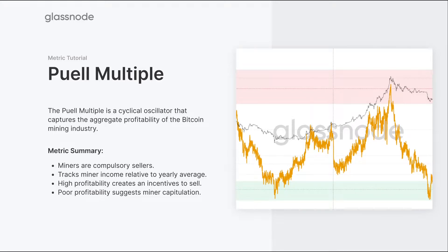The Pure Multiple is a cyclical oscillator that captures the aggregate profitability of the Bitcoin mining industry. Given that miners are compulsory sellers and generally have long time horizons for their investments, what the Pure Multiple does is track the current miner income in US dollars — which is generally how all power and capex is covered by miners — and it compares it to the yearly average of that income.